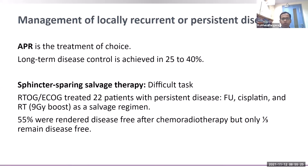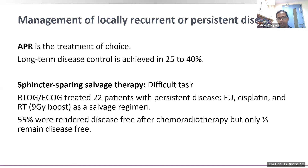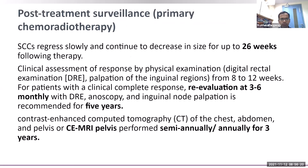For locally recurrent or persistent disease, APR remains the treatment of choice. Long-term disease control is achieved in only 25 to 40 percent of these patients. Sphincter-sparing salvage therapy is difficult in this population. From the RTOG subgroup analysis of 22 patients with persistent disease treated with 5-FU, cisplatin, and a 9 Gy RT boost, 55 percent were rendered disease-free but only one-third remained disease-free long-term. Therefore, surgery remains the preferred treatment for those who fail initial chemoradiotherapy.